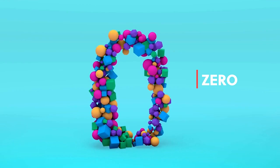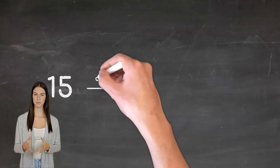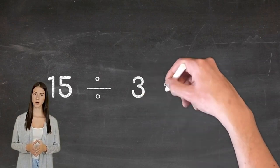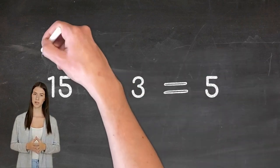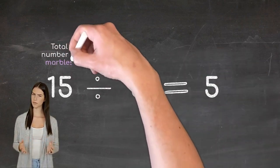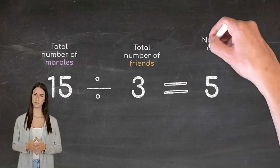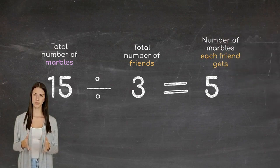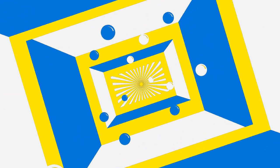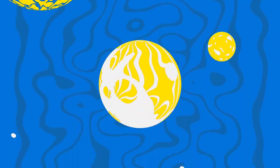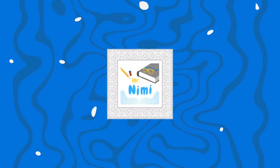Now let's see what the answer is. To solve this problem, we divide the total number of marbles, which is 15, by the total number of friends, which is 3. 15 divided by 3 is 5. So, each friend gets 5 marbles. Thank you.